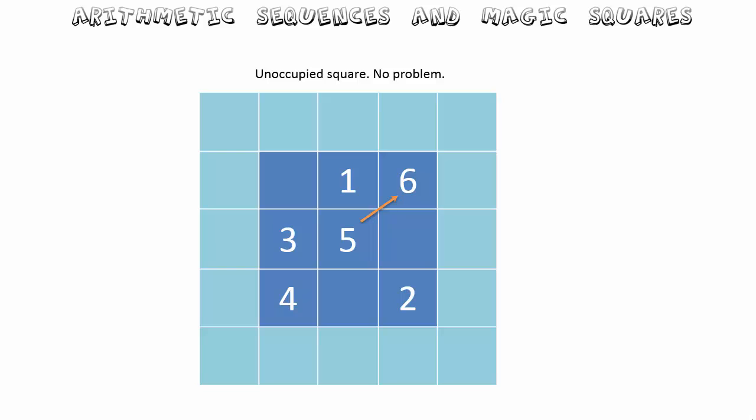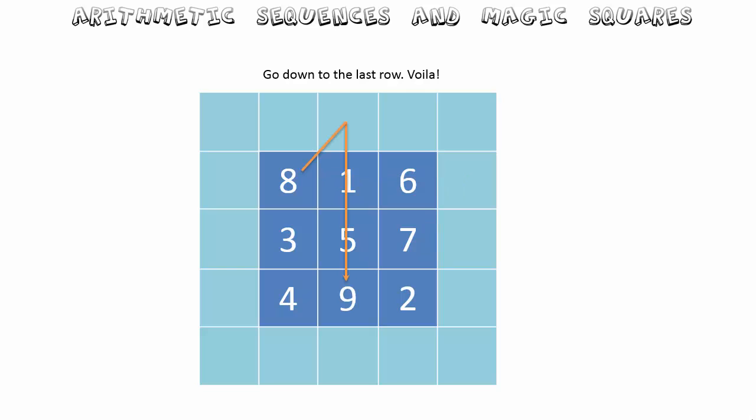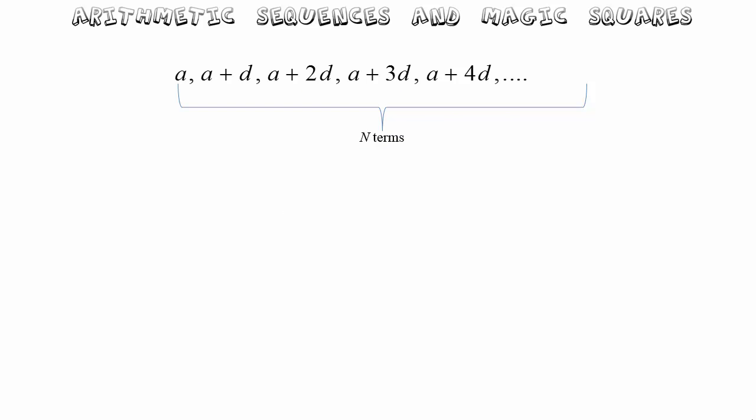Now we come to an interesting situation: if we follow northeast from six, we end up in the top right-hand corner, but we can't go straight down or straight to the left. So just for this situation, the number seven is placed immediately below six. Then northeast: eight, and finally northeast: nine. The magic sum for this square, as you can check, is fifteen.